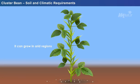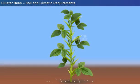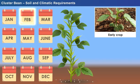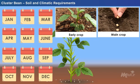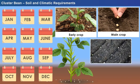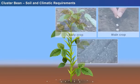Cluster bean can grow in arid regions and cannot withstand waterlogged conditions. As early crops, they are grown in the month of February and March. As main crops, they are sown between the months of June and July. However, in some places, the seeds are sown even during the months between September and October.